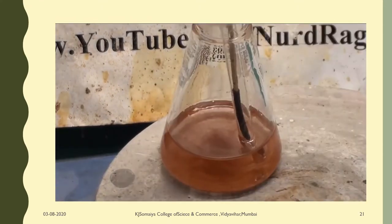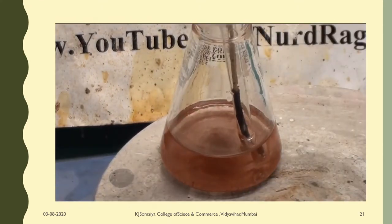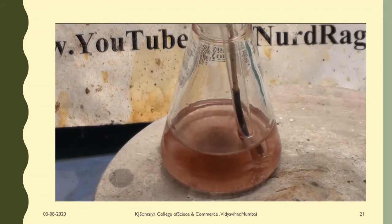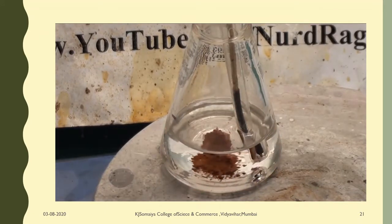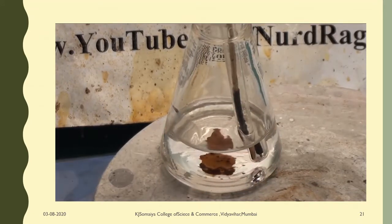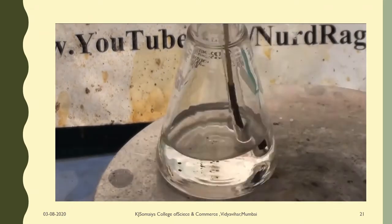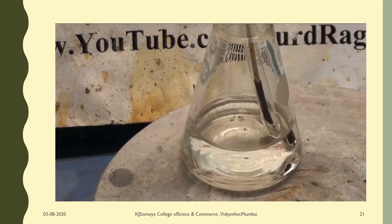Now heat the mixture until the cadmium oxide completely dissolves. What's happening is the cadmium oxide is reacting with the oleic acid to form cadmium oleate. After the cadmium oxide dissolves, keep heating until the mixture hits 225 celsius.